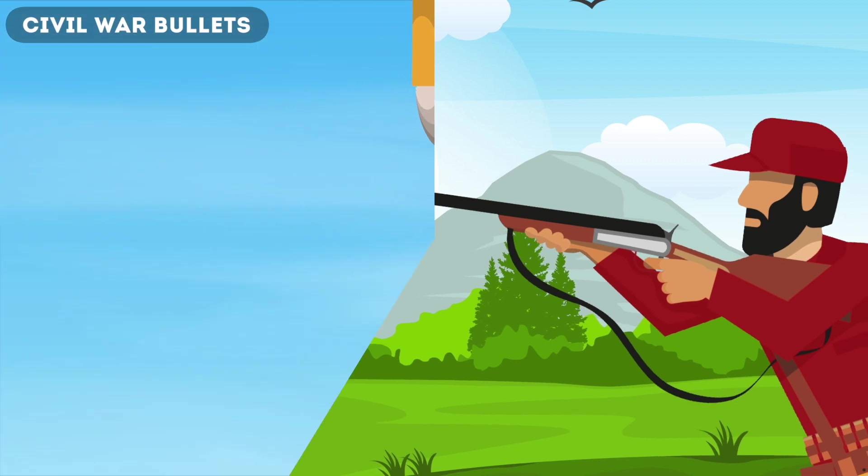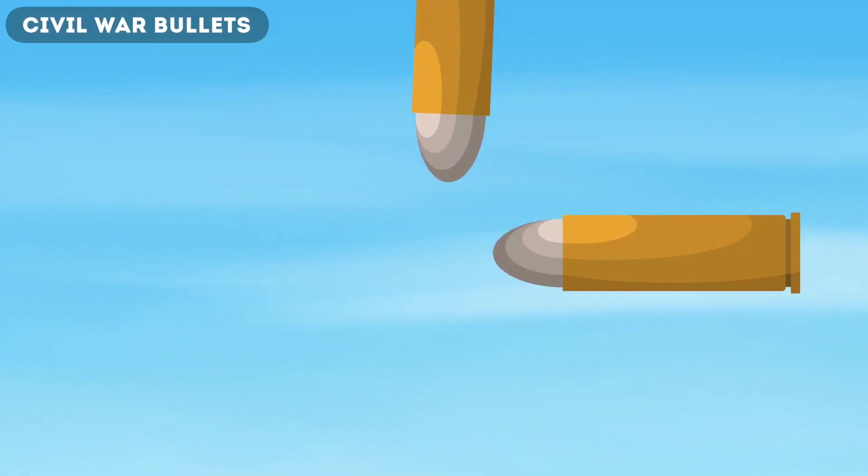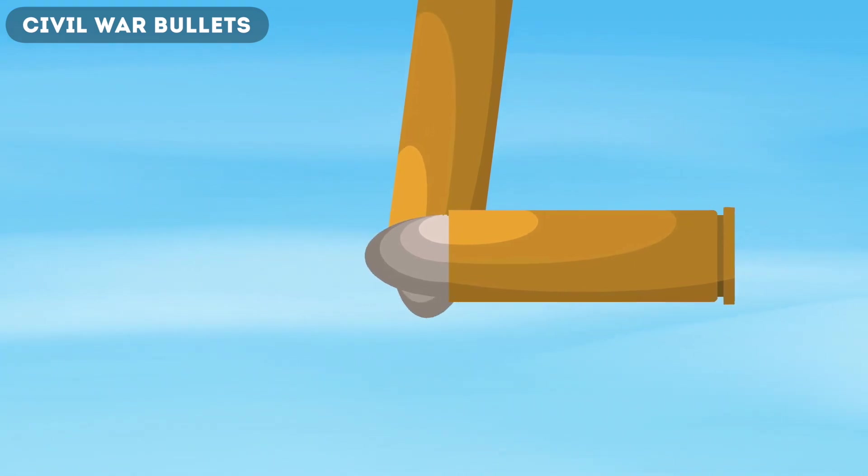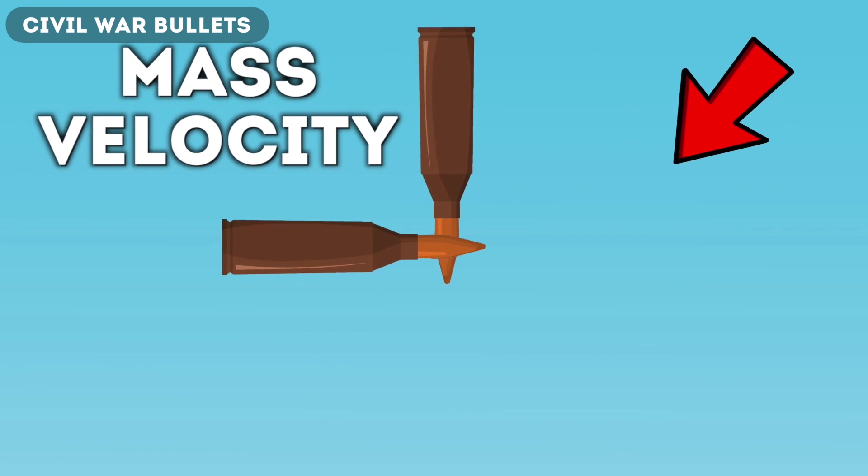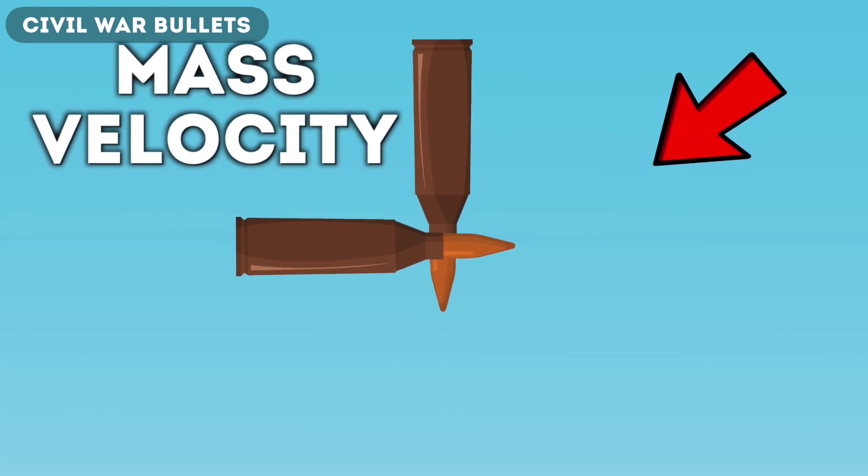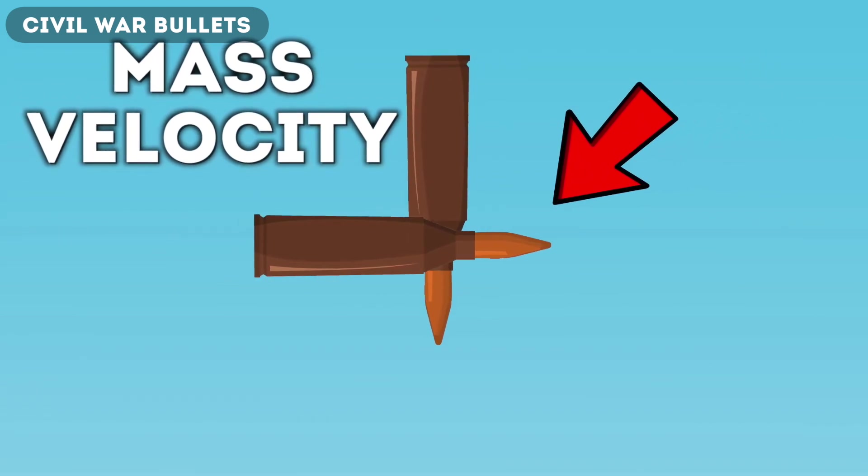However, instead of the bullets hitting head-on, something different happened. One bullet was flying through the air straight when another one hit its side. In this instance, the bullet to the side actually went through the other bullet, and that's because the bullet going to the side had a greater mass and velocity. This means it was going faster and weighed more than the bullet it went through.